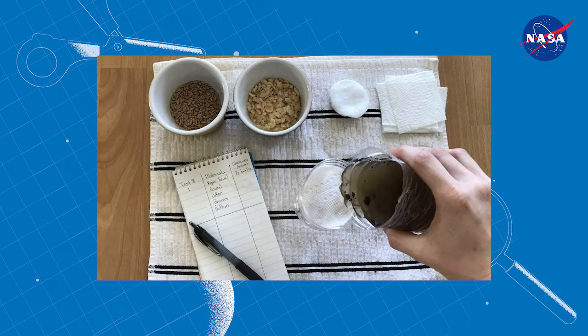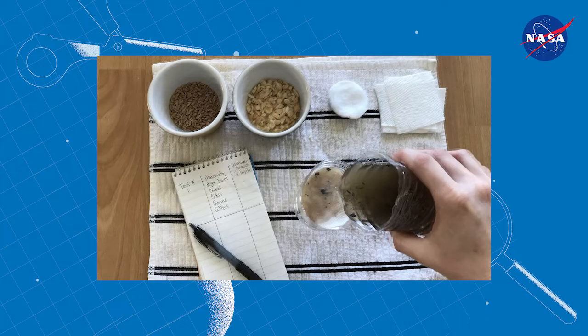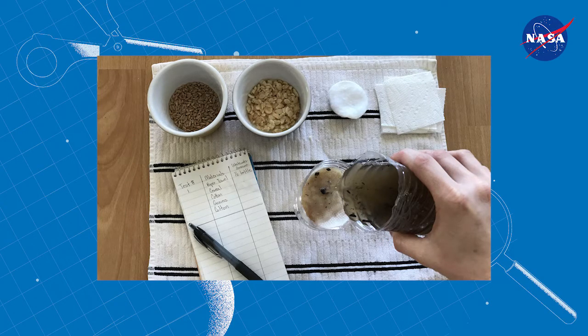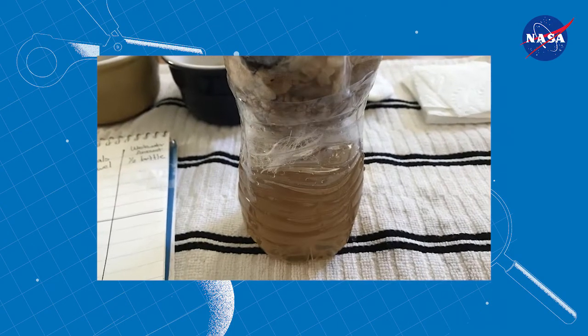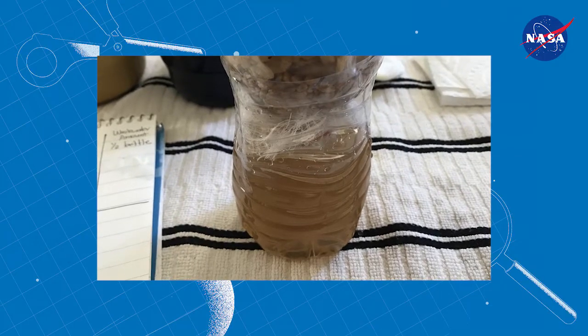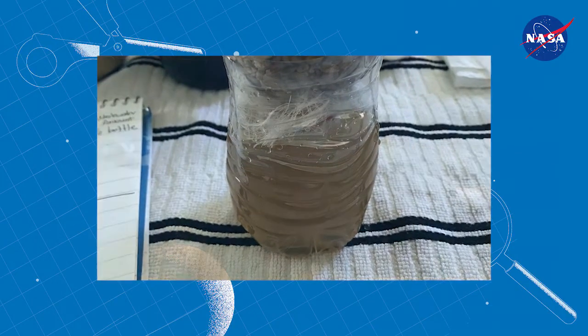Pour your simulated wastewater into the top of your filter and observe the water that comes out. Try to gauge how effective your filter was by observing how much water was filtered, how clean the water is, and how long it took.